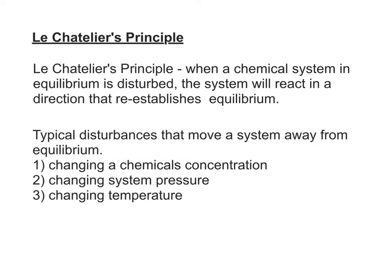In this video, we're going to learn what happens if we have a system that's at equilibrium and something happens to make it go out of equilibrium. This principle was previously described by Le Chatelier and is therefore known as Le Chatelier's principle. It states that when a chemical system that is in equilibrium becomes disturbed, the system will react in a direction that re-establishes equilibrium.